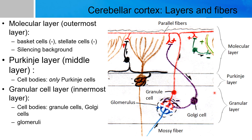The granular layer is the deepest layer of the cerebellar cortex and is just superficial to the white matter underneath it. It houses the granule cells, which are inhibited by Golgi cells and are excited by the mossy fibers, which are afferent branches of the pontocerebellar and spinocerebellar tracts.